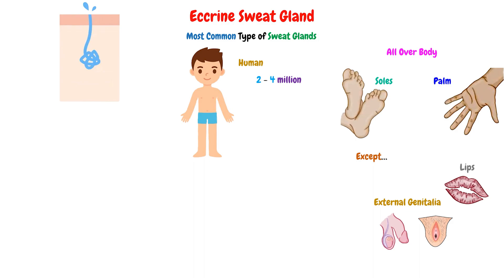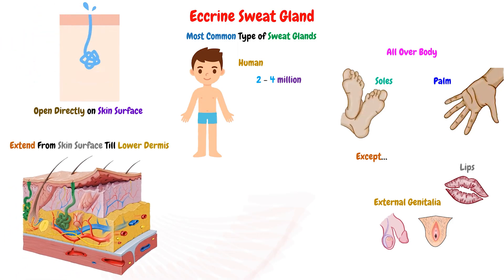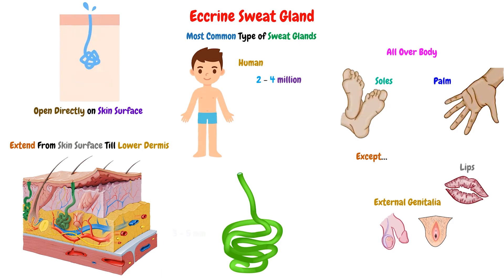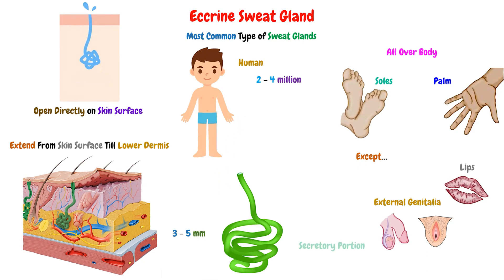These Eccrine glands open directly on the skin surface, and they extend from the skin surface down to the lower dermis. Every sweat gland is about 3 to 5 mm in length, and consists of 2 major parts: the secretory portion and the duct portion — meaning a portion that secretes sweat, and a portion that carries the sweat to the outside.